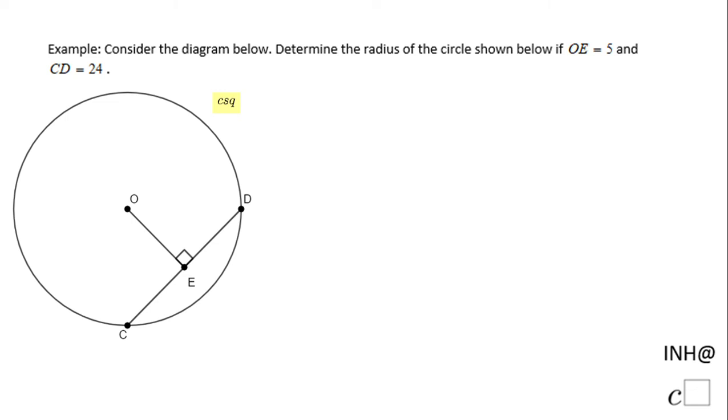Welcome or welcome back to I Need Help at Cisco. In this example we have a circle and we need to find the radius of this circle shown below if OE is 5 and CD is 24. So this is 5 and the whole chord, this chord CD, is 24.